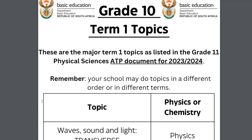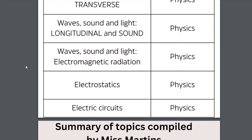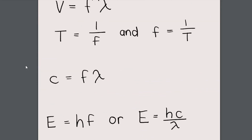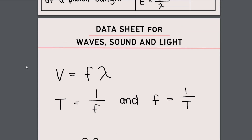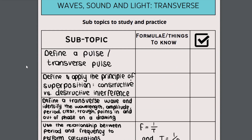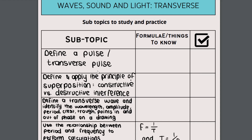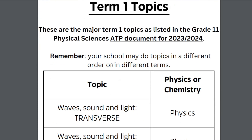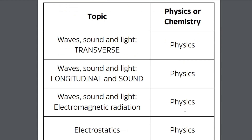What makes this document nice and useful is that not only have I listed the topics and given you some formula and data sheets, but when I've listed out the subtopics under each topic I've made it into a checklist. You can check off whether you've done it in class or use it as a study checklist when studying for tests and exams. Looking at term one physical sciences grade 10, we've got physics topics all throughout — no chemistry topics.